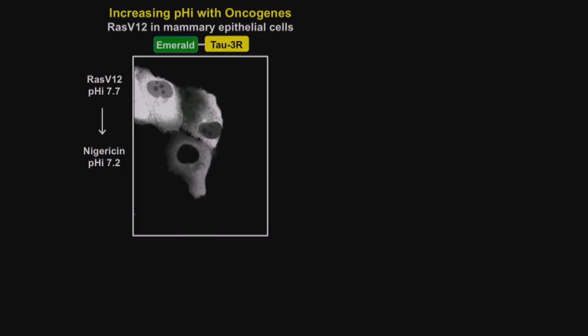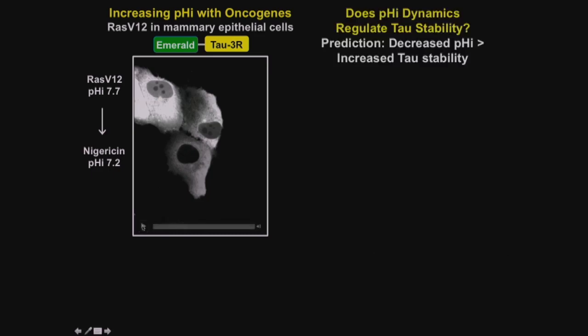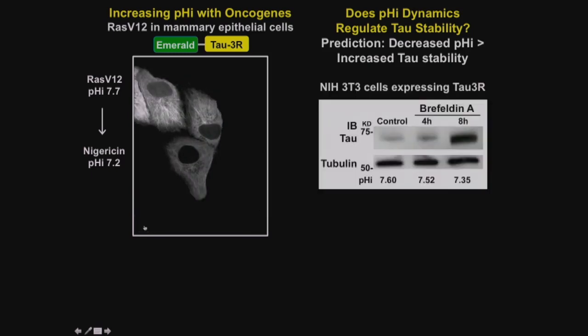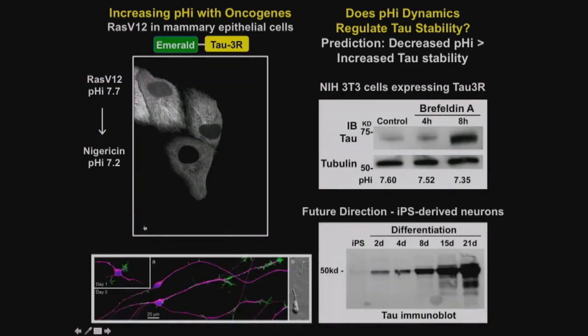This links to cancer because one way we can increase pH is to express an oncogene. In cells expressing both tau and an oncogene, tau is very cytosolic. Using nigericin, a protonophore, to neutralize pH and bring it down to 7.2, tau goes completely back onto microtubules immediately. We're starting to do this with endogenous tau using iPS-derived neurons, staining for microtubules in pink and actin in green, and showing tau comes on with differentiation.